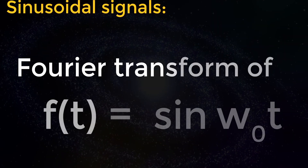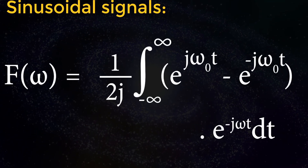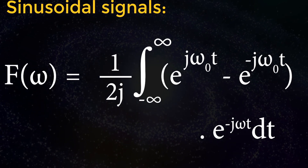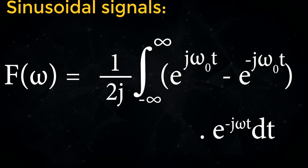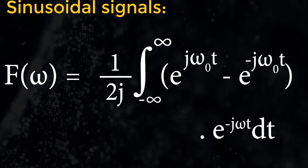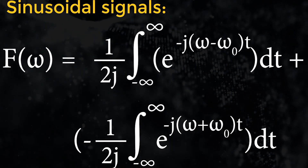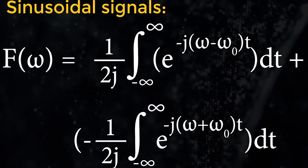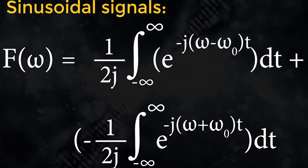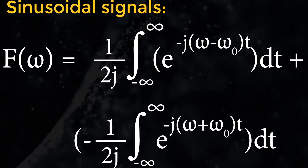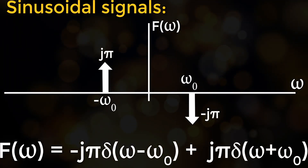For sinusoidal signals, the Fourier transform of f(t) = sin(ω₀t): F(ω) = (1/2j) · ∫_{-∞}^{∞} [e^{jω₀t} - e^{-jω₀t}] · e^{-jωt} dt. This gives F(ω) = (1/2j) · ∫_{-∞}^{∞} e^{-j(ω−ω₀)t} dt − (1/2j) · ∫_{-∞}^{∞} e^{-j(ω+ω₀)t} dt. Therefore, F(ω) = −jπ·δ(ω − ω₀) + jπ·δ(ω + ω₀).